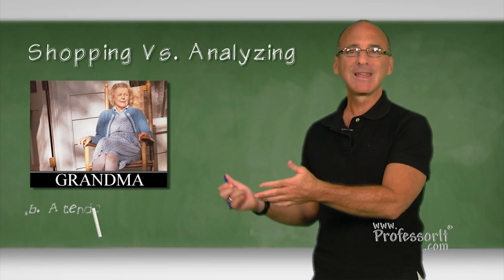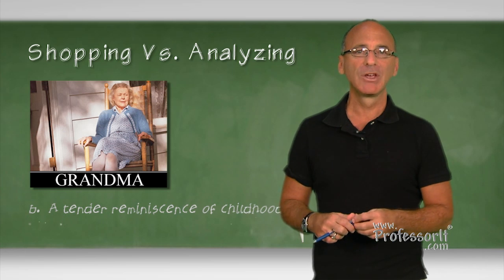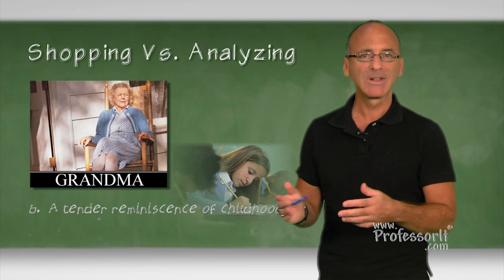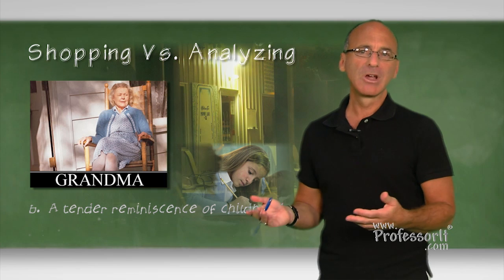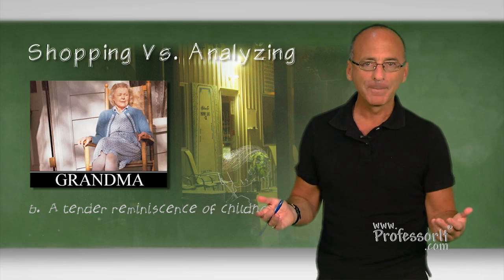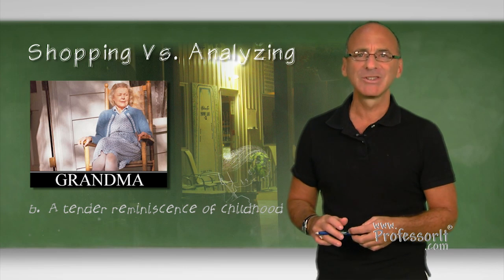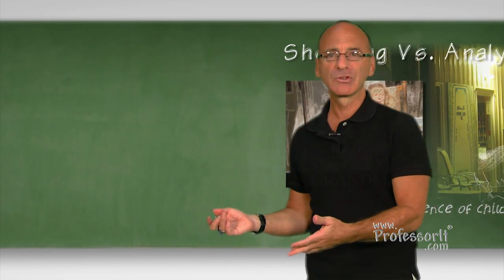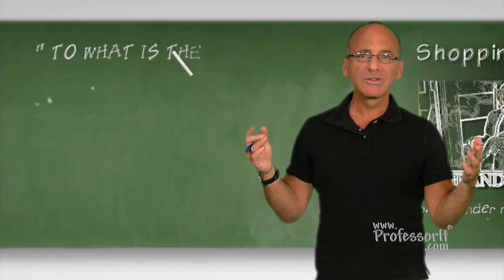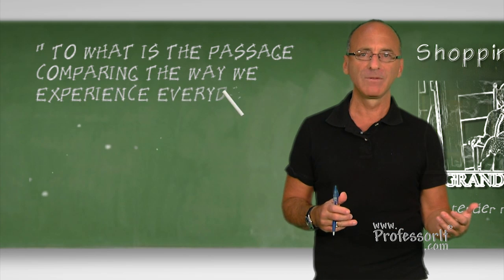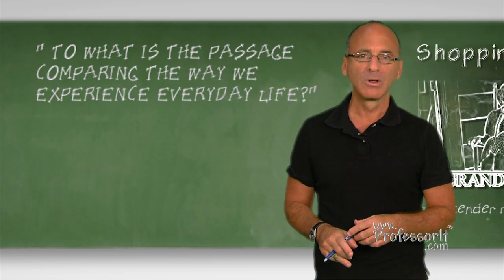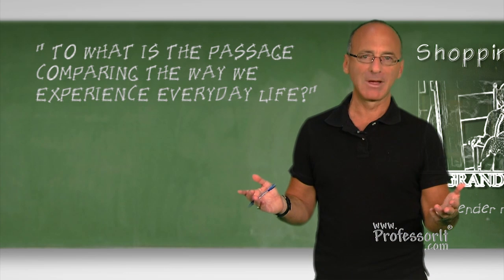Well, those of you who watch the theory segment on shopping versus analyzing might already know why. It's because of grandma. You chose B, tender reminiscences, because you recognized elements within the text that suggested childhood reminiscences and flashbacks. For example, carefree childhood, 4th of July at grandmother's farm, eating huckleberry pie on a warm summer's afternoon. But the question isn't asking if we have reminiscences or flashbacks or what they might consist of. It's asking to what is the passage comparing the way we experience everyday life and how we do so using a metaphor. So sorry, no offense to your family, but leave grandma out of it.